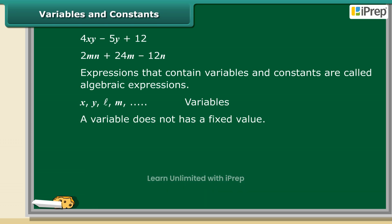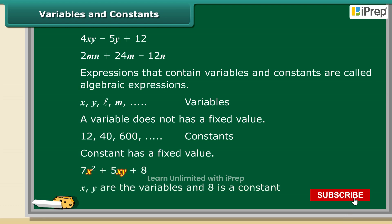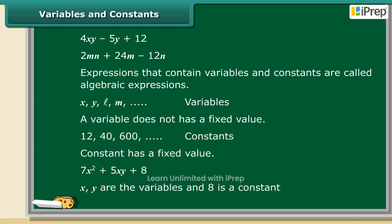On the other hand, a value that does not change is a constant. So in the equation 7x² + 5xy + 8, x and y are the variables and 8 is a constant.